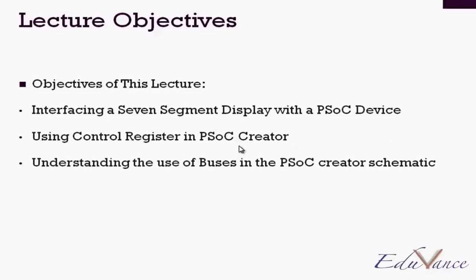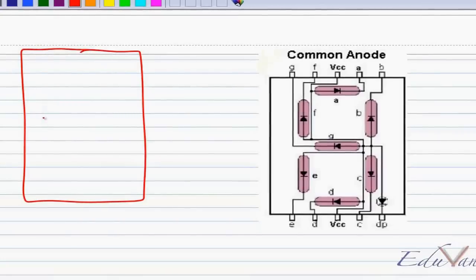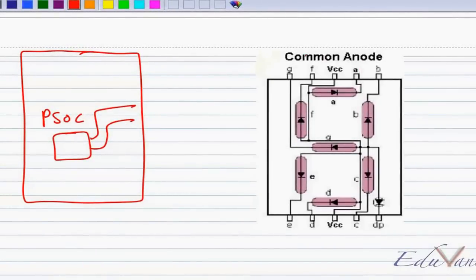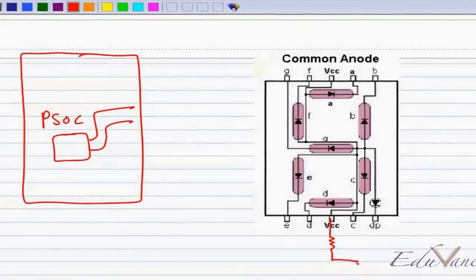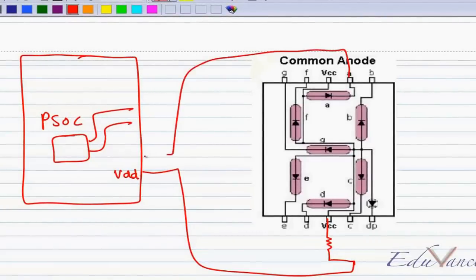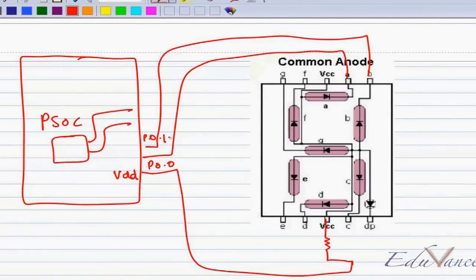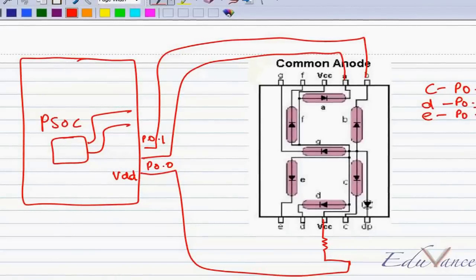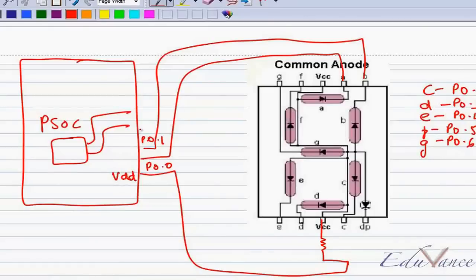Before I start with the PSOC Creator, let's look at the basic schematic interface. If this is my PSOC board with the PSOC device with the IOs, we will use the connections as follows. This is a common anode seven segment display, so we will connect this through a resistor to the VDD port of your board. A is connected to P00, B to P01, C to P02, D to P03, E to P04, F to P05, G to P06. All of them are on the board.